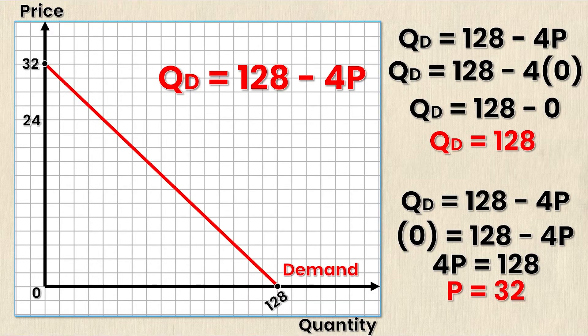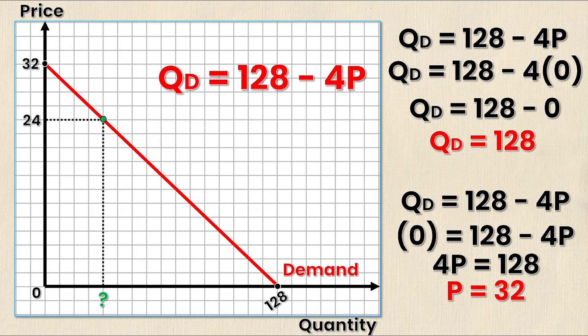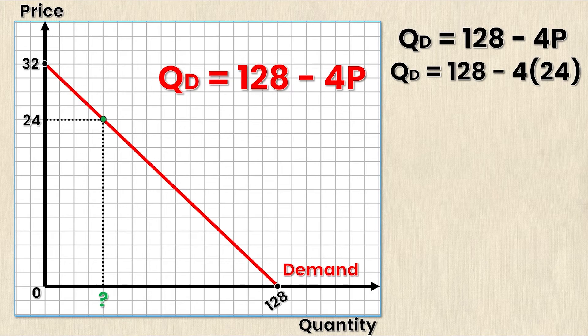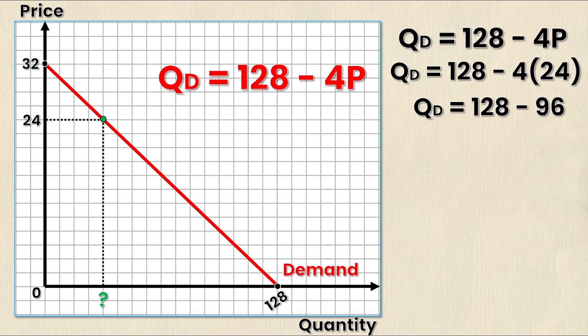Suppose we choose a price $24 and we want to know the corresponding value on the Q axis or the corresponding quantity. Well instead of subbing in a price of zero I'm going to sub in a price of 24 since I know that the price is 24. Solving further I'll have Q = 128 - 96 and then simplifying further Q_D = 32. So now I can label that point on my demand curve as well, 32 and 24.